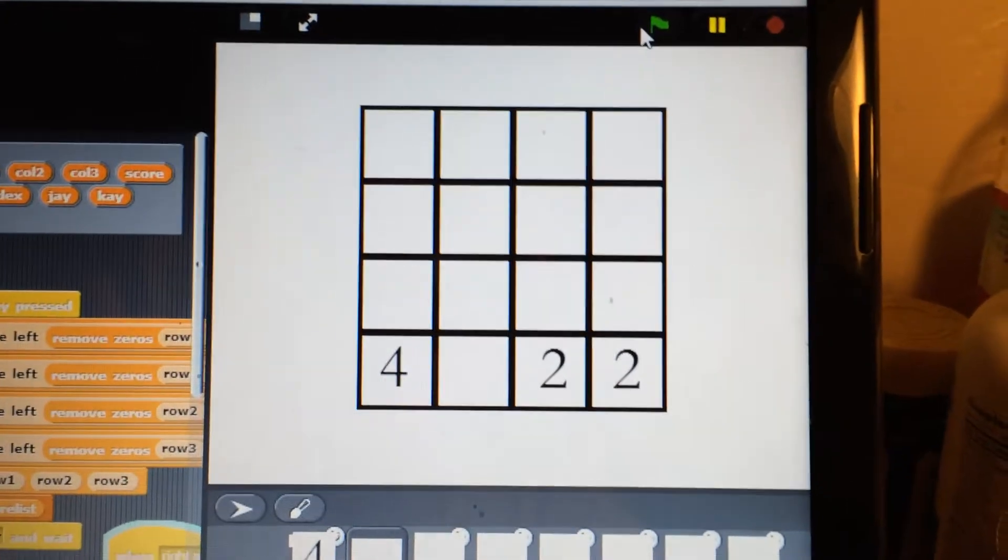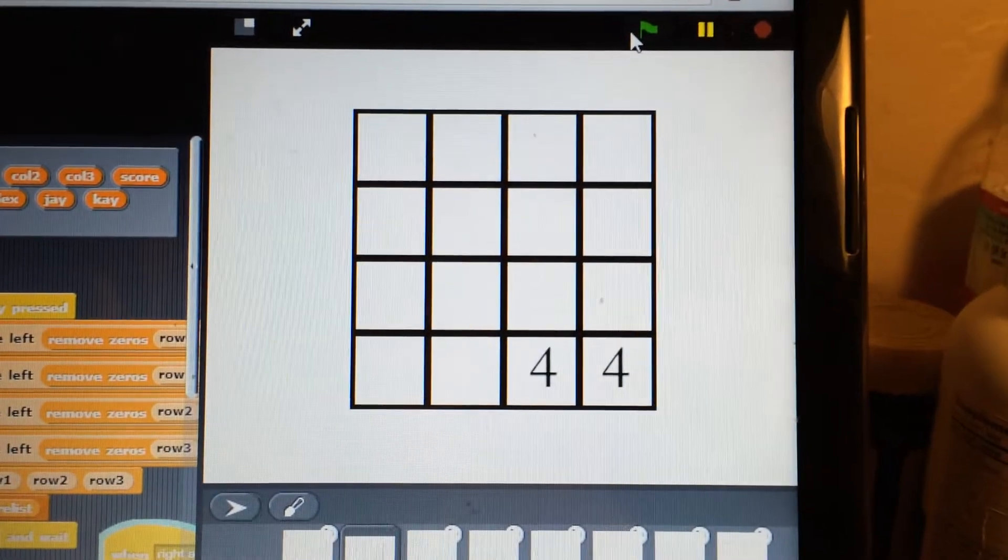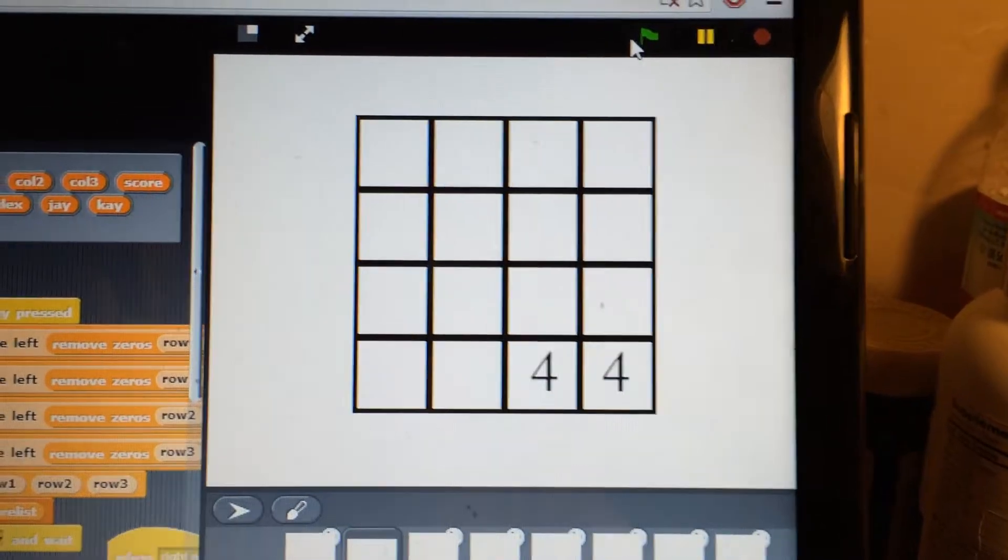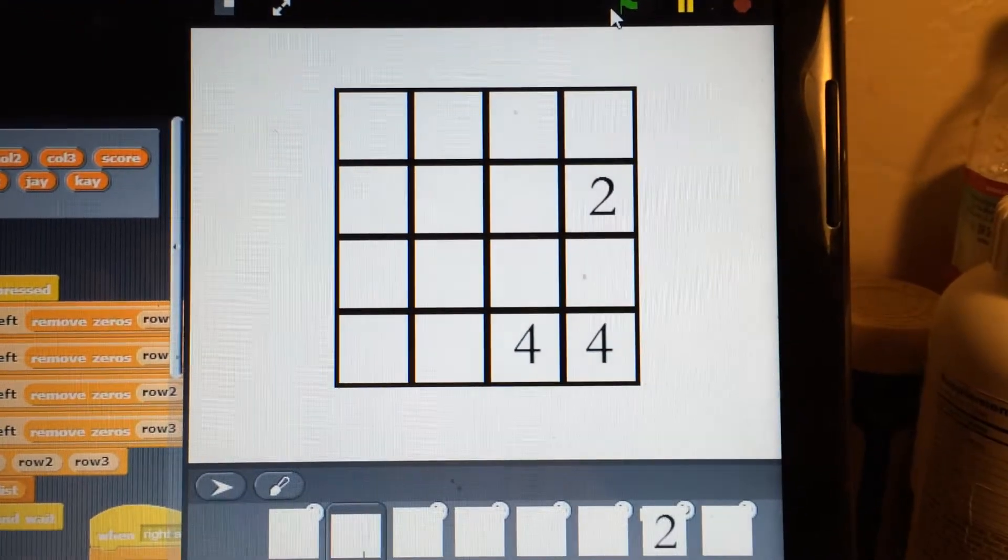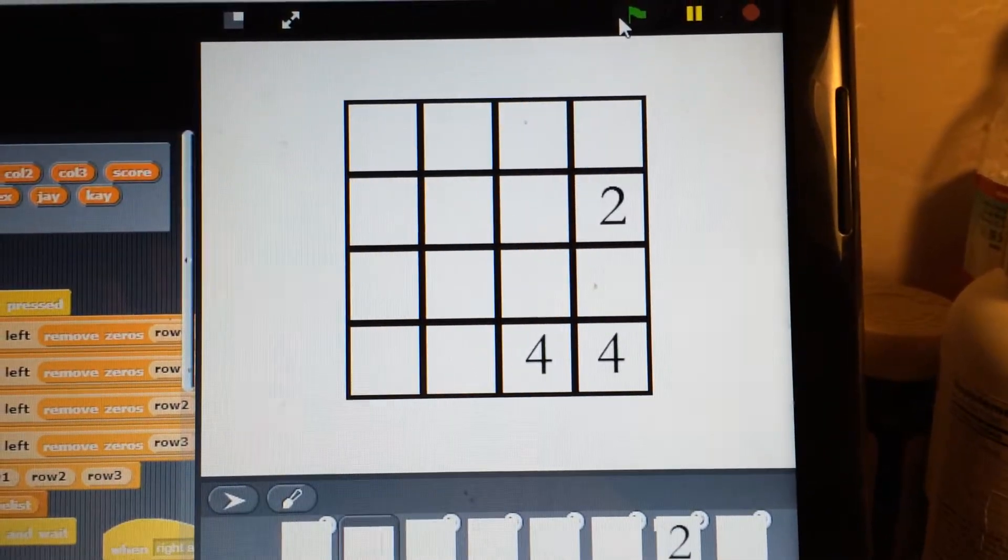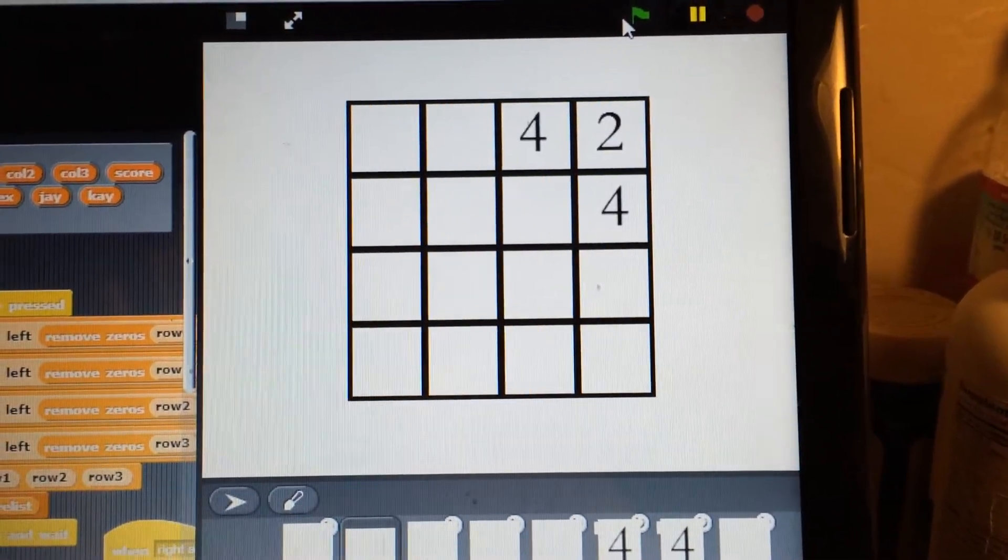Let's say I want to move right. That gives me four, four. And up. Just what you would expect.